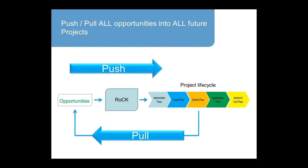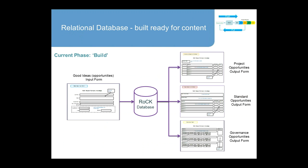The next slide shows it more succinctly, showing the pull from really any phase in the project lifecycle, capturing the opportunities, and then pushing them back into the project. This slide shows what we've worked on so far, which is the development of a relational database built ready for the content we're gathering. On the left-hand side you can see the good ideas and opportunities input form, and through the ROC database how we systematically gather those opportunities and disseminate them.